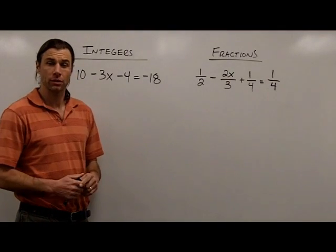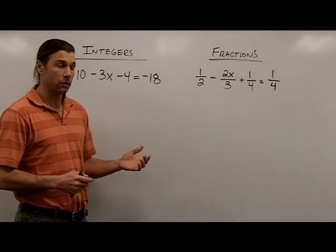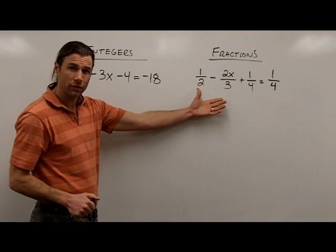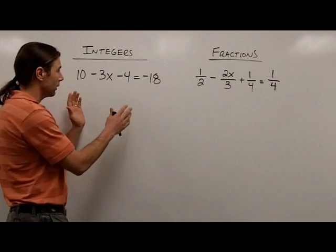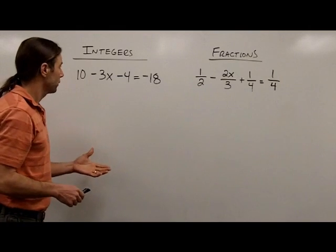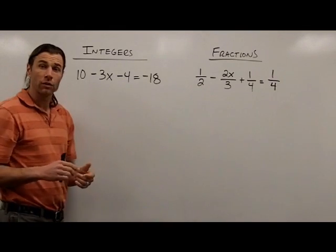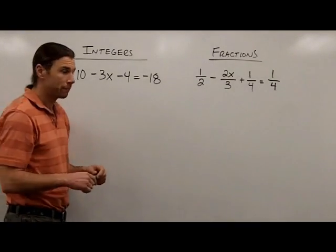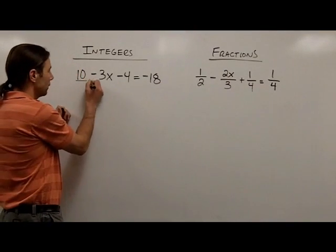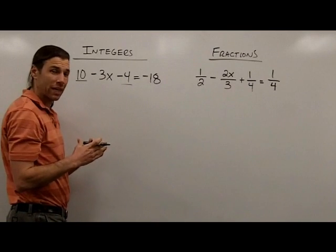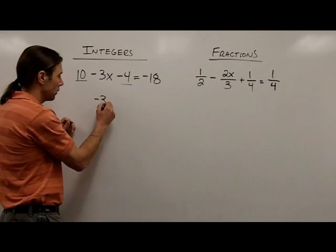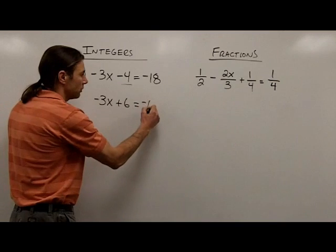In the next couple of examples, we're going to ramp it up and involve more steps in solving equations with fractions. Again, I've given an example with integers and a similar example with fractions so you can see the connection. For the integer example, our first step is to simplify each side. The left side has like terms: 10 and negative 4 combine to give positive 6. So I'm left with negative 3x plus 6 equals negative 18.